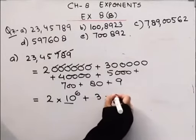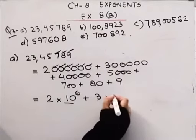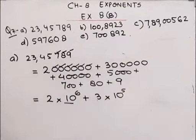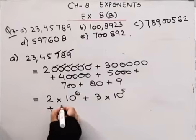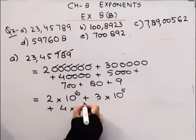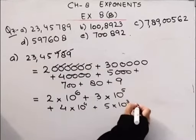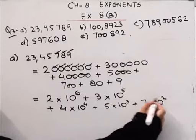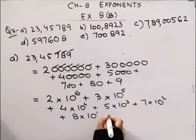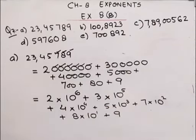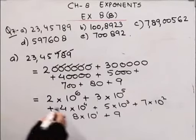Moving to the next part: 3 can be written as 3 — 1, 10, 100, 1000, 10000, lakh. 3 lakh can be written as 3 into 10 to the power 5, because there are 5 zeros. So I wrote 5 on base 10. Plus 4 into 10 raised to the power 4. Plus 5 into 10 raised to the power 3, because we have 3 zeros. Plus 7 into 10 raised to the power 2. Plus 8 into 10 raised to the power 1. Plus 9. Clear? We have written this in expanded form using powers of 10 in the exponent.